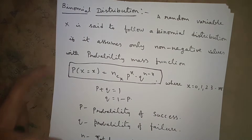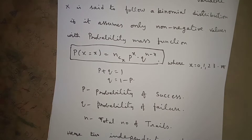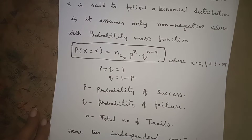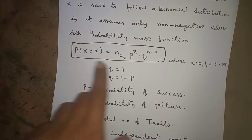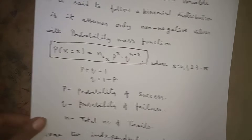Here, small N is the total number of trials. P is the probability of success, Q is the probability of failure. N and P are the parameters of the binomial distribution. X equals 0, 1, 2, 3, and so on up to N. So P(X = x) = NCX · P^x · Q^(N−x), for X = 0, 1, 2, 3, ..., N. This is the formula of binomial distribution.